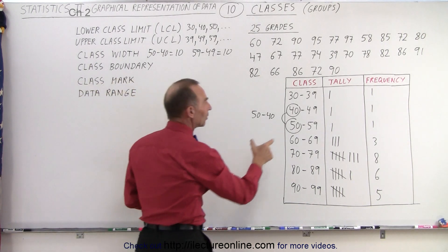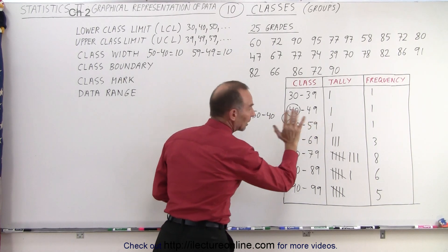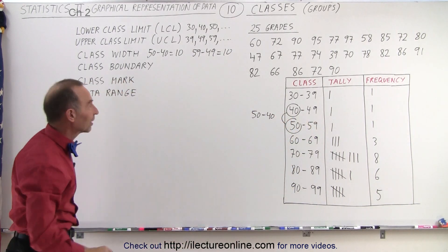Sometimes people will think that the width is simply the upper limit minus the lower limit, but that will not give you the correct value for the class width.